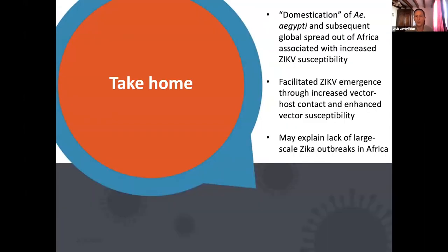In conclusion, our findings indicate that the domestication of Aedes aegypti and its subsequent global spread out of Africa was associated with an increase in its susceptibility to Zika virus infection. We think this may have facilitated Zika virus emergence not only through increased vector-host contact but also due to enhanced vector susceptibility. This may offer an explanation for the lack of large-scale Zika virus outbreaks in Africa, where the dominant mosquito subspecies is more resistant to Zika virus infection and subsequent transmission.